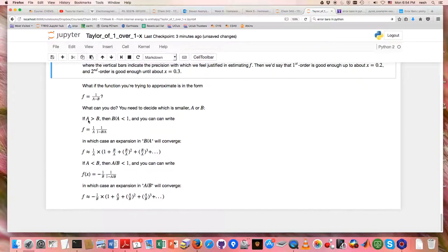Well, what we'd have to do is decide which one is smaller, a or b. So if b is smaller than a, then b over a is smaller than 1, and we can multiply top and bottom by 1 over a.